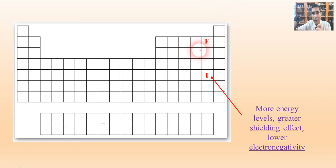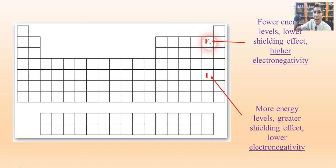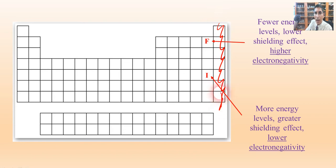On the other hand, fluorine has fewer energy levels, so it has a lower shielding effect. That nucleus can attract the outermost energy level pretty easily, and if there's a random electron floating around, it's going to attract it very easily. In fact, fluorine has the highest electronegativity of all elements on the periodic table. We don't worry about the electronegativity of noble gases in this course, so we can ignore them for this purpose.